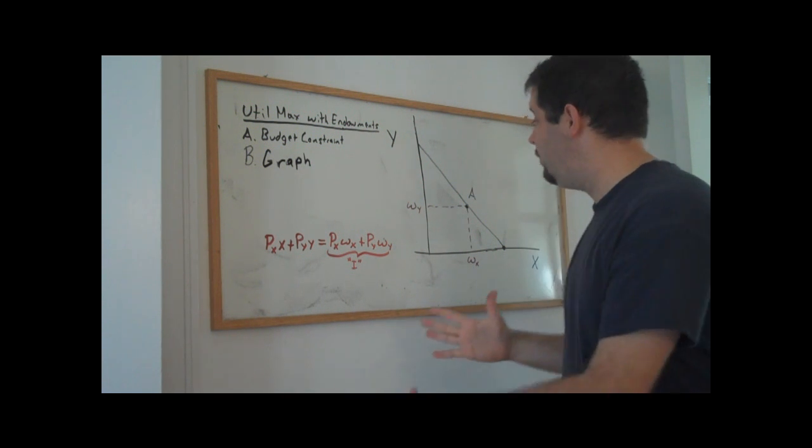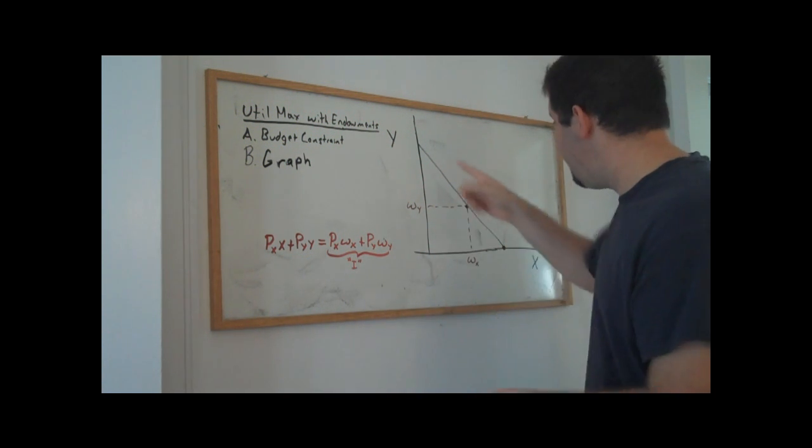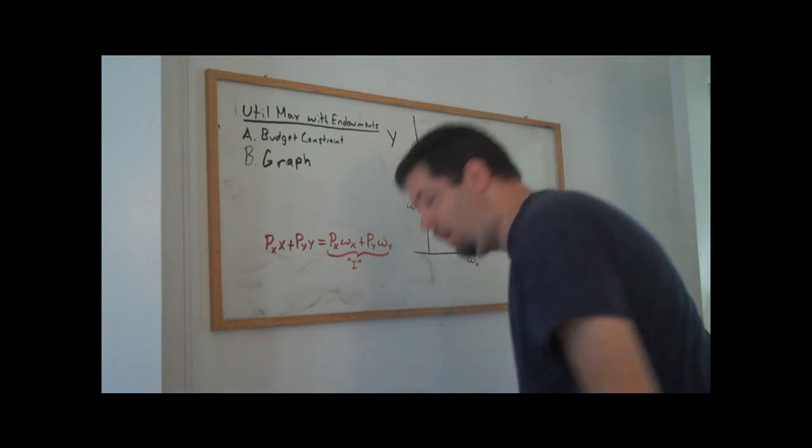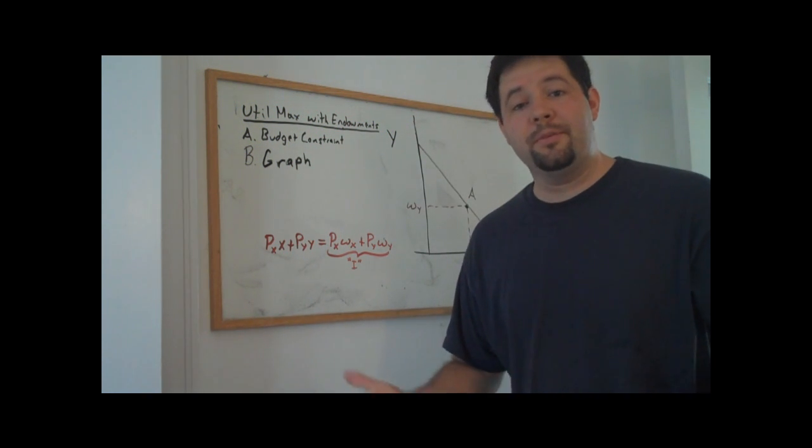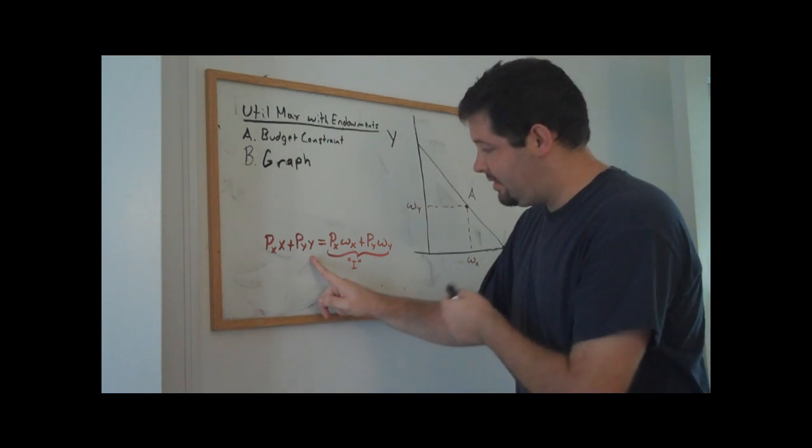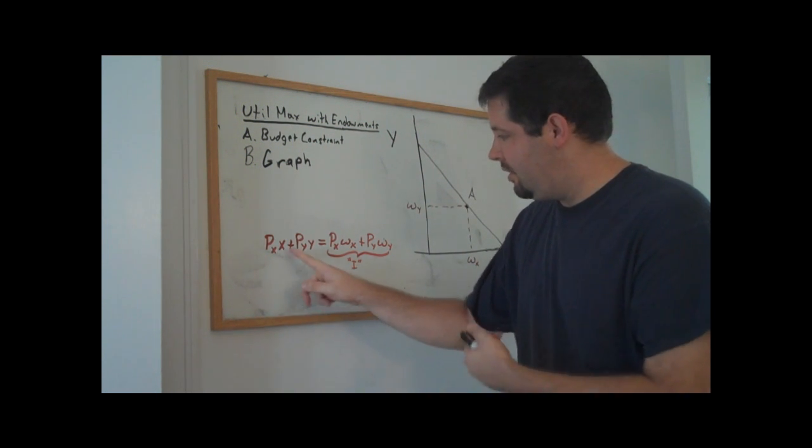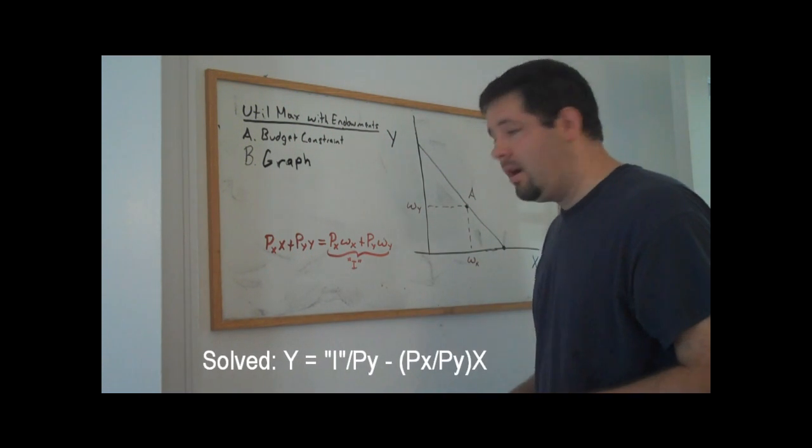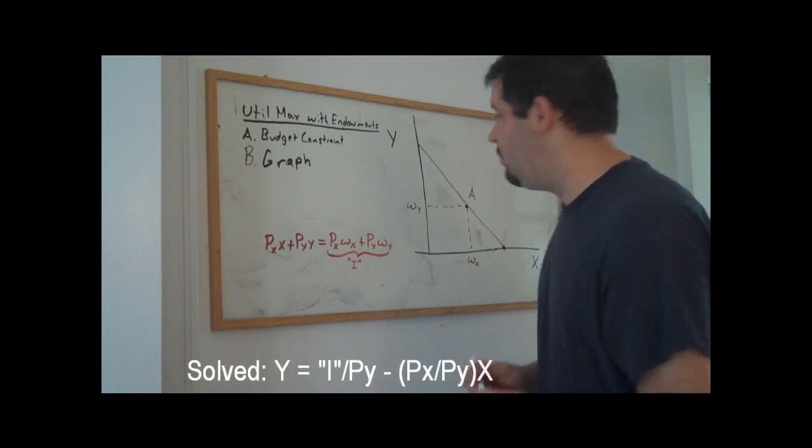And in addition to this graph, another thing that we know, as we knew from before in our description of the original budget constraint, the slope of this budget constraint, if you solve for Y in terms of X, that is, the slope of this budget constraint, just like it was before, is negative PX over PY.